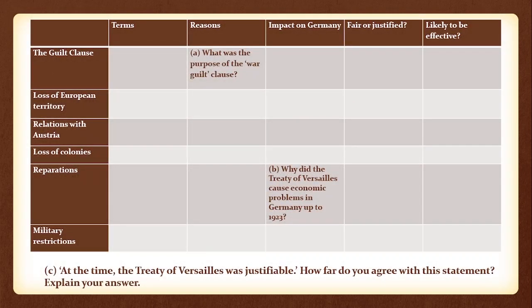Now, I'm not going to present the details of the Treaty — that would be boring in this kind of presentation, though of course it's absolutely essential that you should know them. But as you can see in this overarching framework, I encourage my students to move from the detail of those terms to consider the reasons behind them, their impact on Germany, whether they were fair or justified or not, and whether they were likely to be effective — useful for addressing whether it was a good or a bad treaty, as well as how we came to have a Second World War. And I've added a few past exam questions to show how the notes will direct you to answering them.